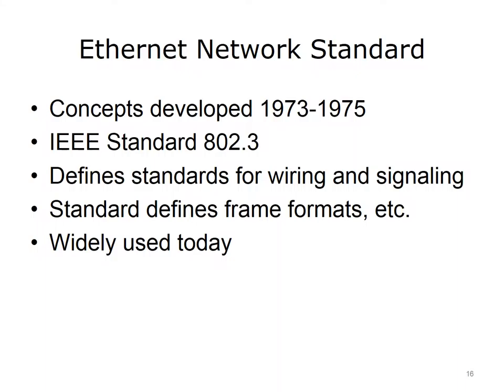Starting with the Ethernet network standard, Ethernet gets its name from the physical concept of Ether. In the late 1800s, scientists thought some unknown medium housed light particles as they passed through the air — they called it Ether. Ethernet cables and the Ethernet standard were developed between 1973 and 1975, encompassed in IEEE Standard 802.3. This standard defines the rules relating to wiring, signaling, frame formats, and field sizes. A frame is an electronic construct that organizes communication into fixed-size fields, allowing switches and other devices to forward communication throughout the network.